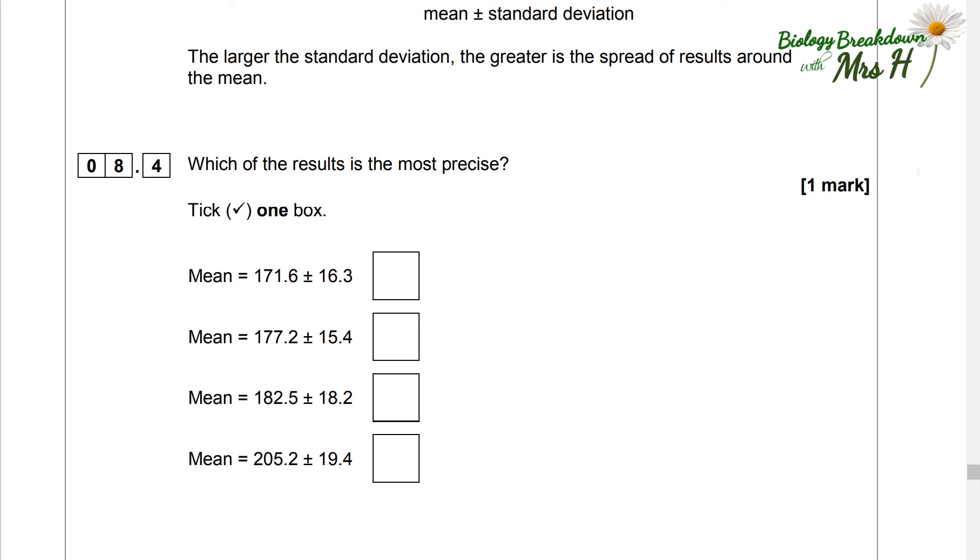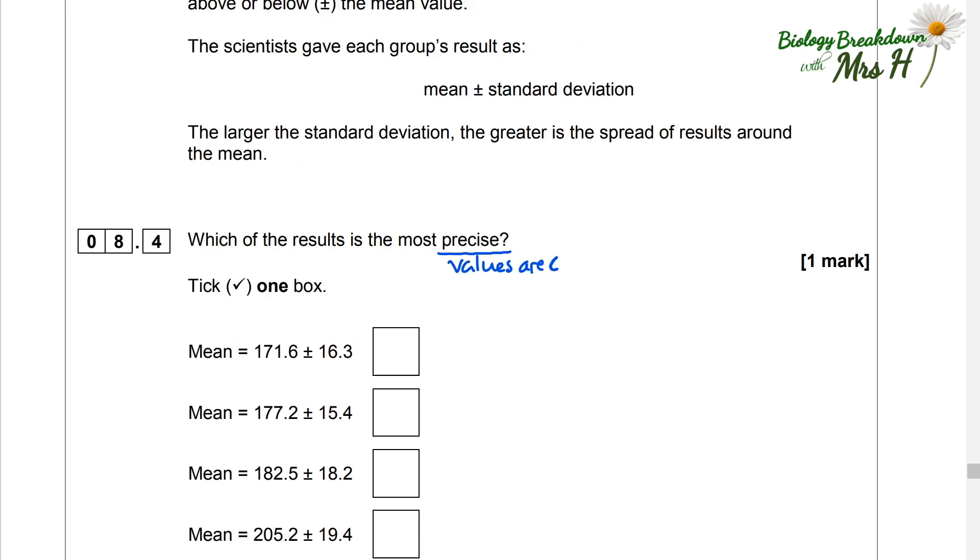Which of the results is the most precise. So precise means getting similar results every time you do it. So that would mean less of a spread around the mean. So if you did the experiment and you got 30, 30, 30, 30, those are extremely precise results. But if you got 0, 10, 20, 30, 40, 50, 60, those are, it might give you a similar mean, but they are not very precise results. So that'd be a large standard deviation. Anyway, which of these results is the most precise? So we're looking for the smallest standard deviation and that is the 15.4.